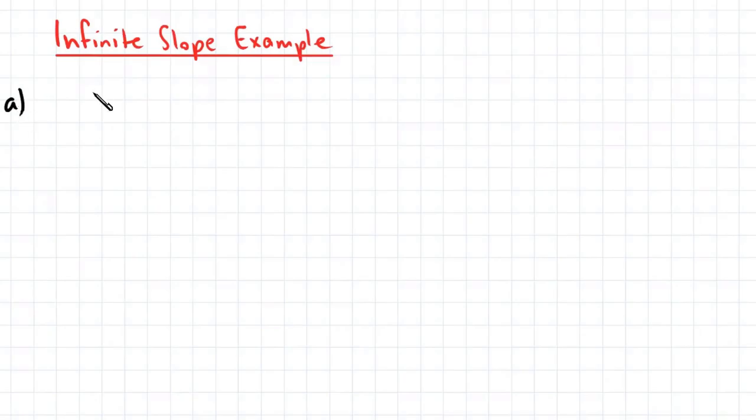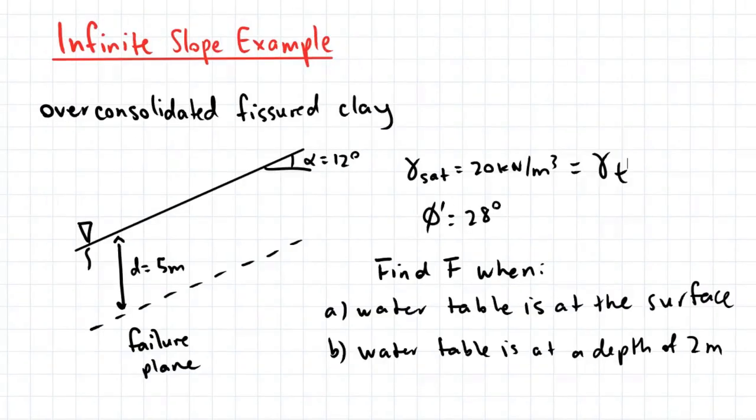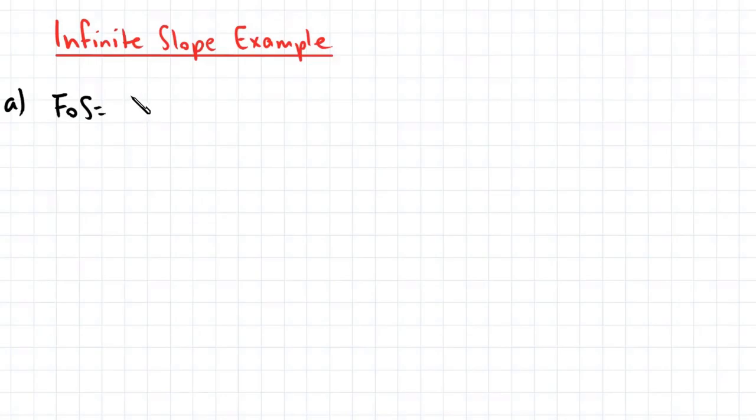So for part A, our factor of safety. Before I write down the equation for the factor of safety, bear in mind that this is fissured clay. And if you quickly google what fissured clay is, this is actually a really dry type of soil. So in this case, our cohesion is equal to zero. So this means we can use our special and short equation for factor of safety, and this makes things a bit easier for us.